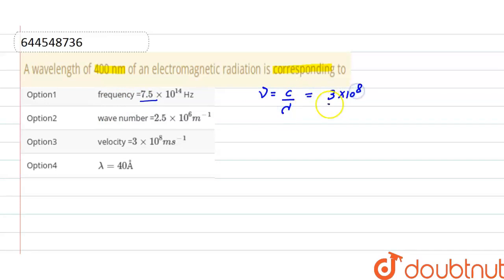Wavelength is 400 and 1 nanometer is equals to 10 raised to the power minus 9 meter. So frequency here will be 7.5 into 10 raised to the power 14 hertz.